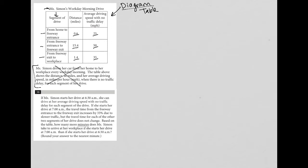If Ms. Simon starts her drive at 6:30 AM, she can drive at her average driving speed with no traffic delay for each segment. The 6:30 AM start time means normal speed, exactly what the table shows for average speed in each segment.